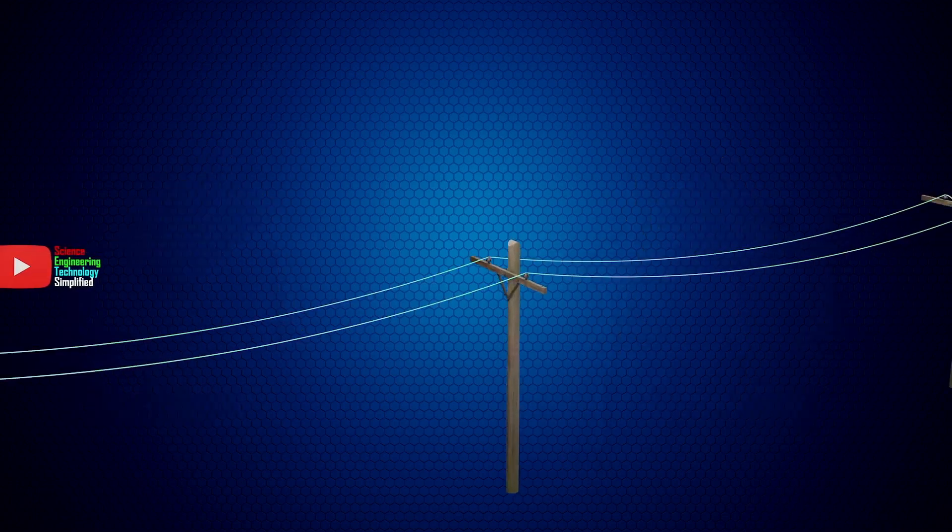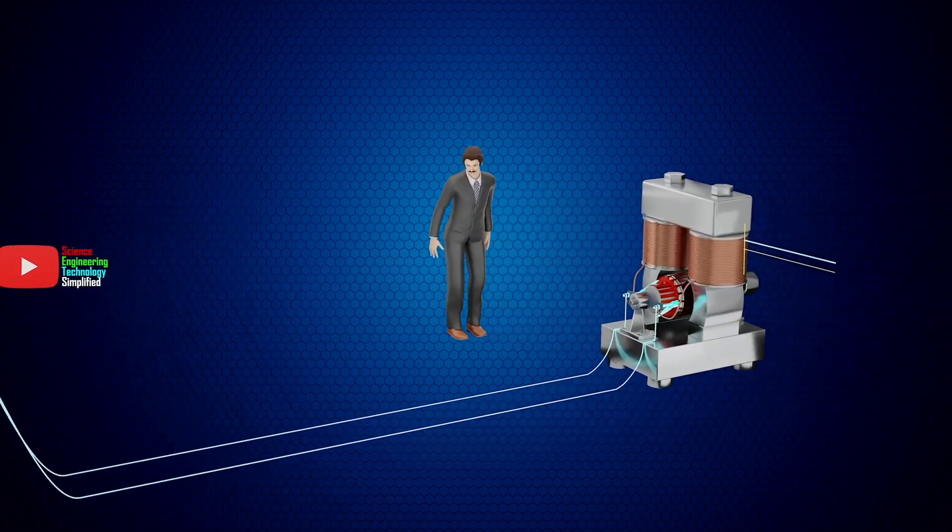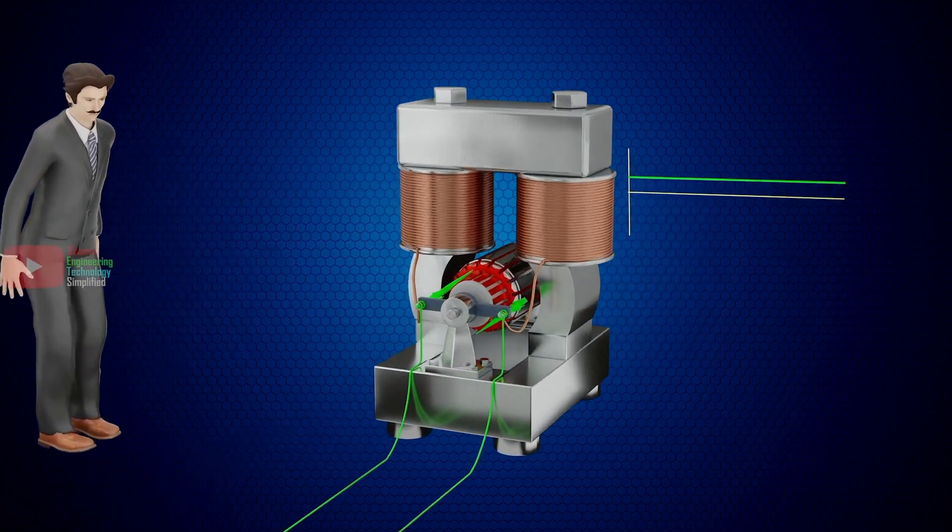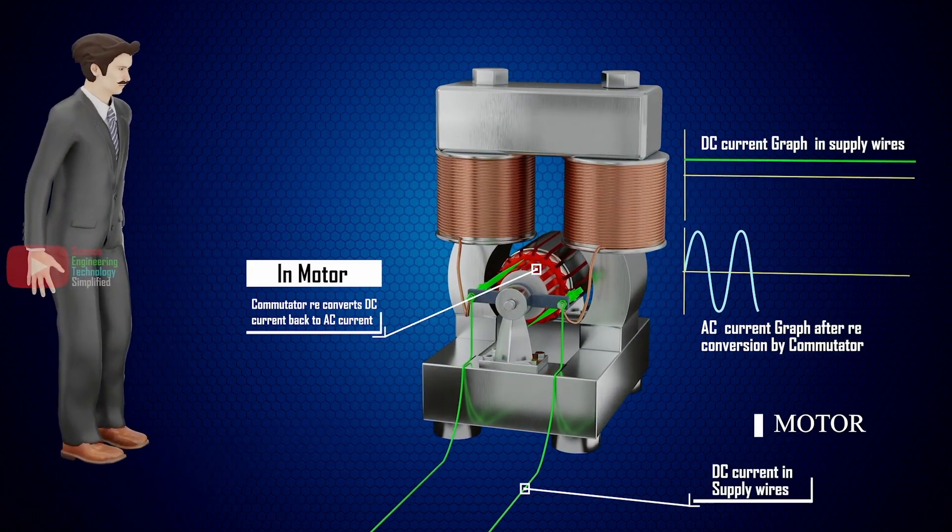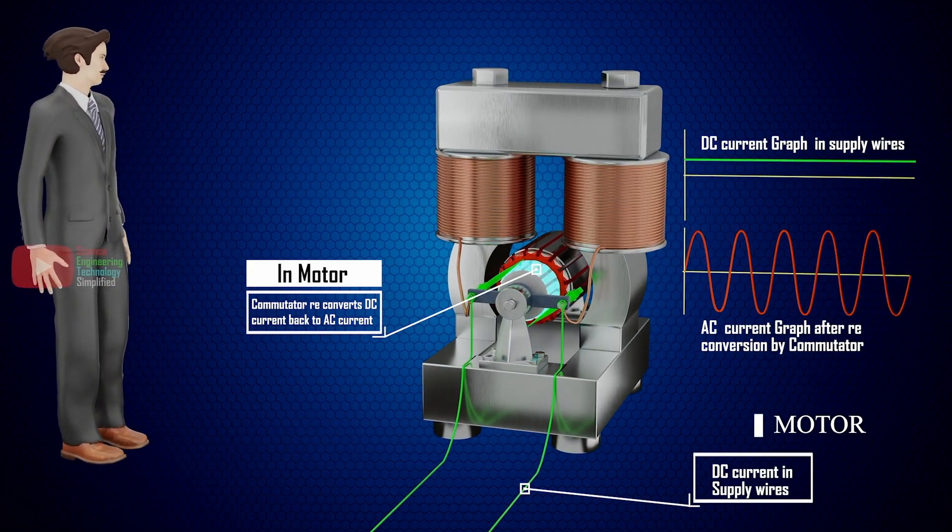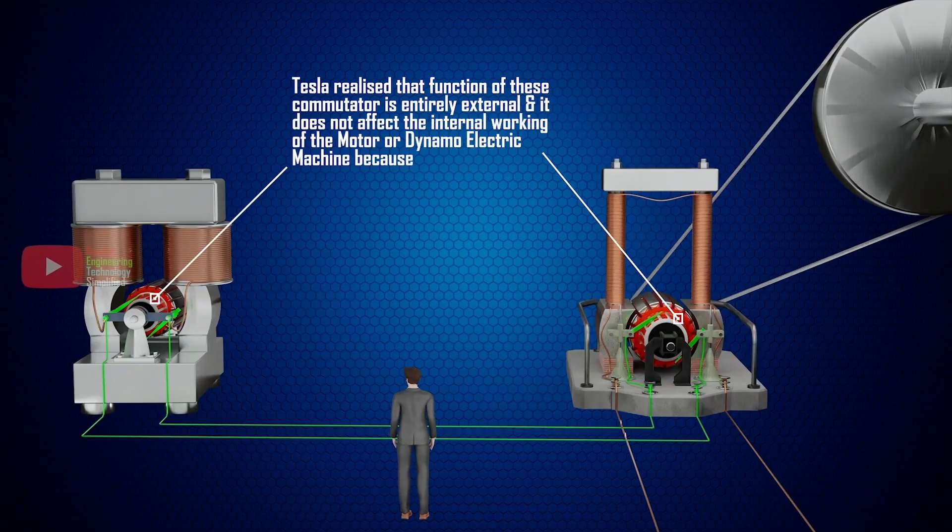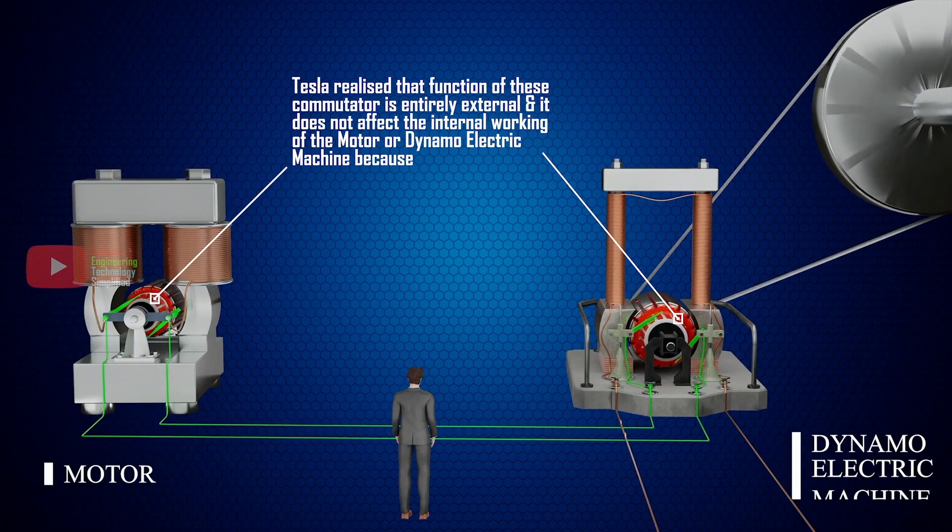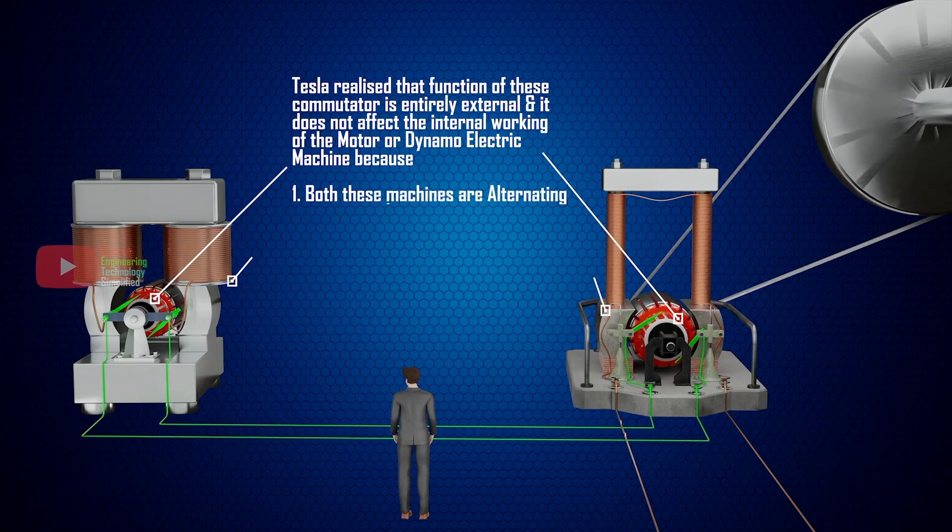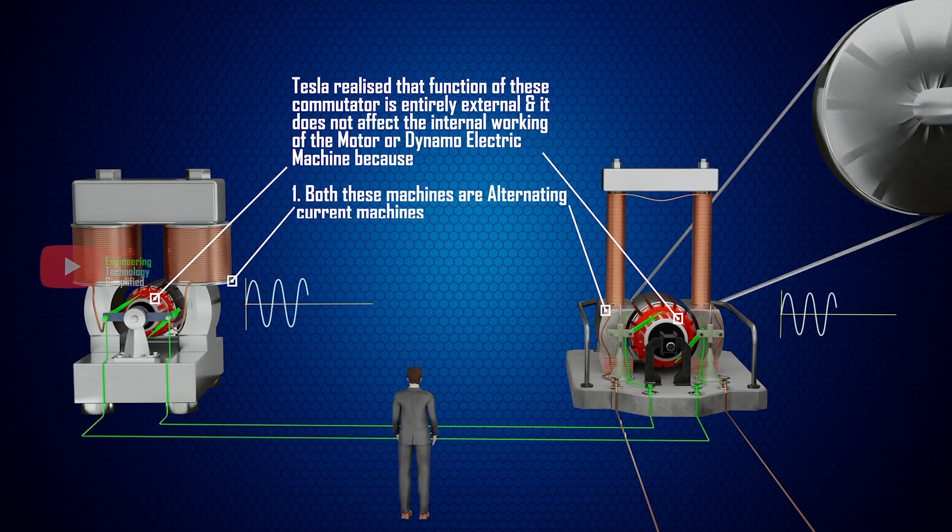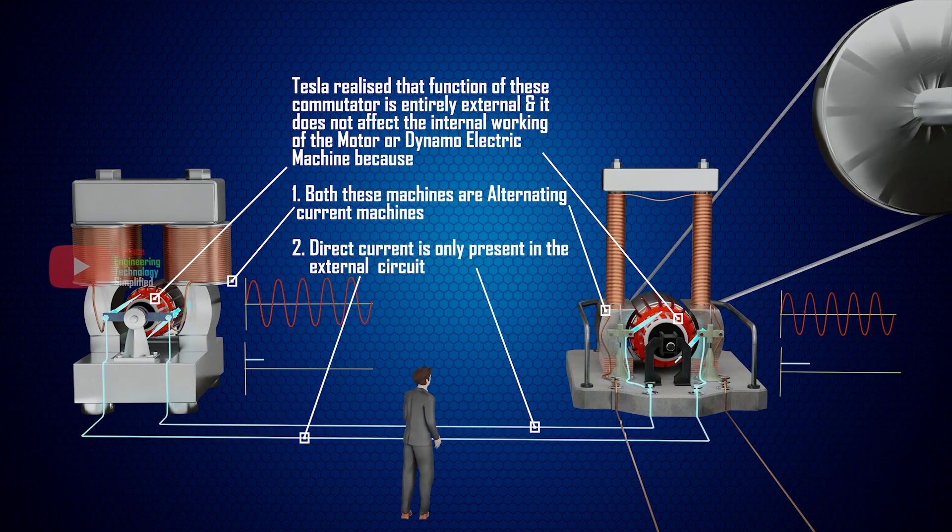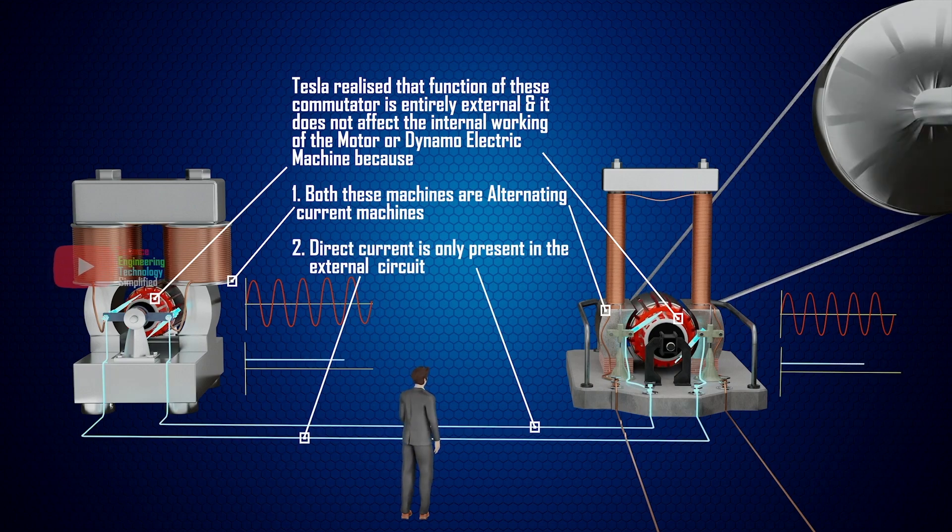This direct current could not be utilized in the motor. It had to be reconverted into its original state of alternating currents again by using another commutator. Thus, the function of the commutator was entirely external, and it did not affect the internal working of the motor or the dynamo-electric machine. In reality, therefore, all machines are alternating current machines. The currents appear as continuous current only in the external circuit during their transit from the generator to the motor.